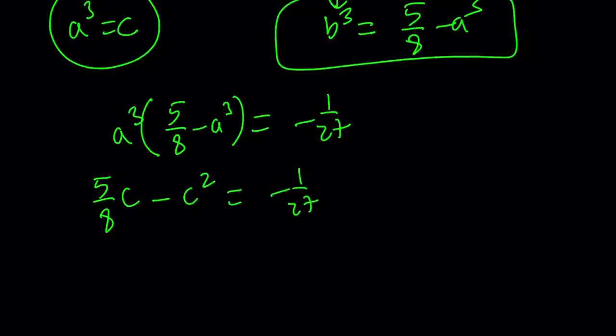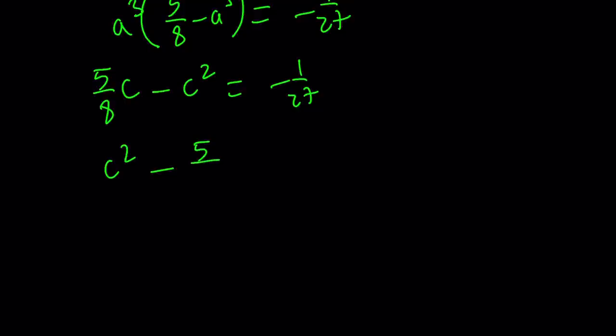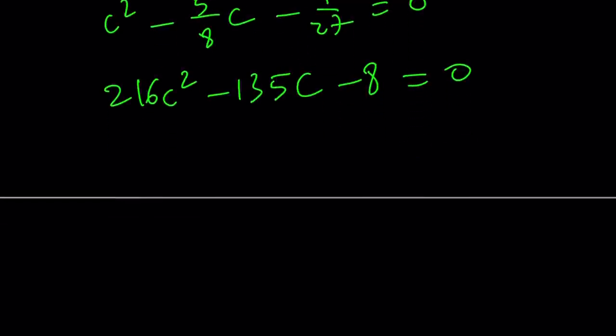Let's put everything on the same side. c squared minus 5 over 8c minus 1 over 27 equals 0. Multiply both sides by 27 times 8, which is 216. And you get the following: a quadratic. 216c squared minus 135c minus 8 equals 0. This is a quadratic, so it will be easy to solve. Here's the solutions: 45 plus minus 7 times the square root of 57 divided by 144. And you're like, what? Are you serious? And a cubed is c, so this is a cubed.